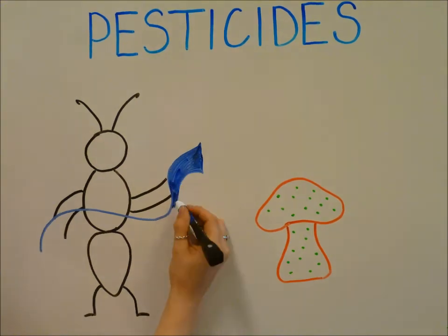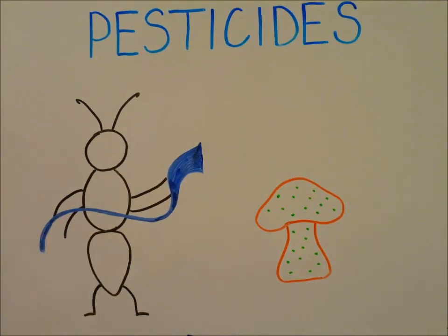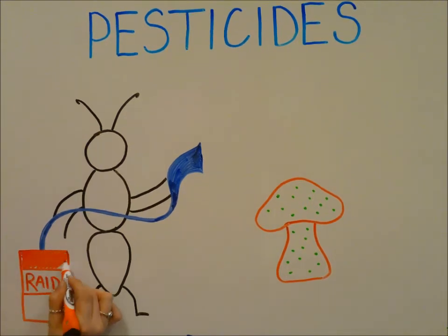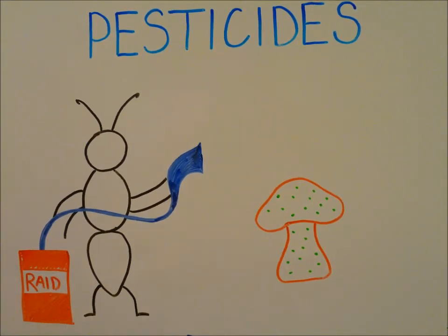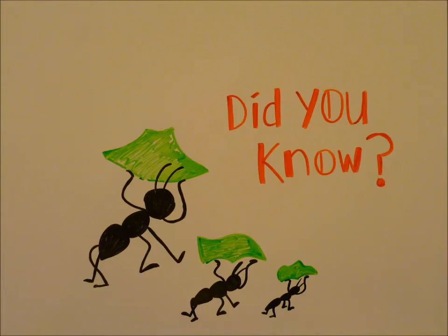The ants have a specialized pouch that holds bacteria. These bacteria excrete antibiotics that the ants spread on the fungi to keep pests away, much like how farmers use chemicals to combat pests. Did you know most antibiotics used today come from the ant bacteria?